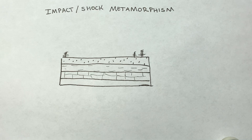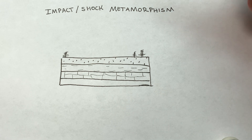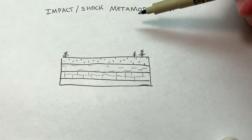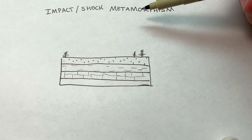You may not think about it, but when a meteorite strikes the Earth's surface, not only does it do a lot of destructive damage that we see in the form of craters, but there's also a lot of metamorphism that happens, and we call this impact or shock metamorphism.